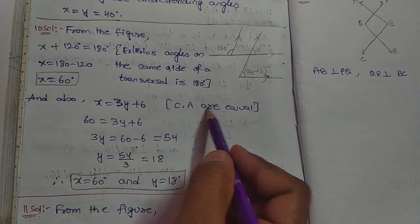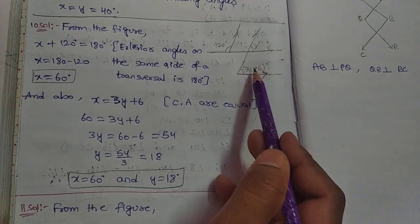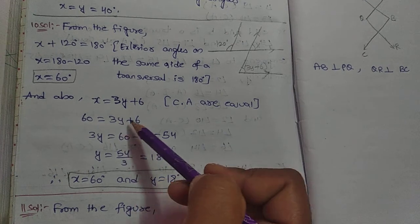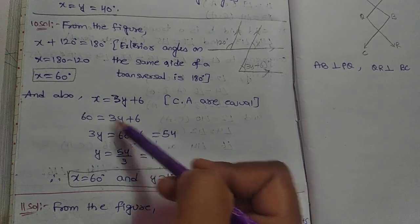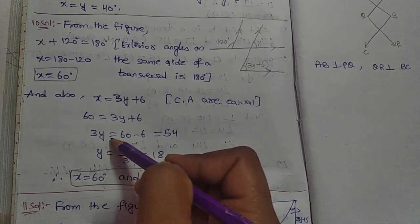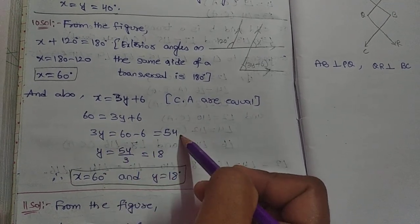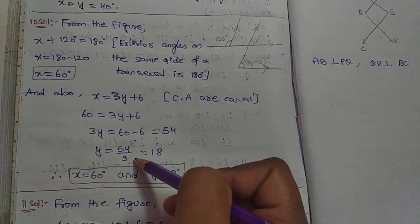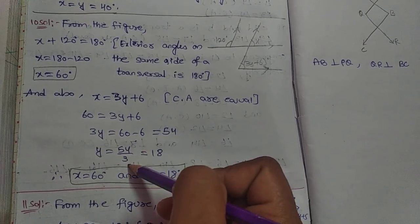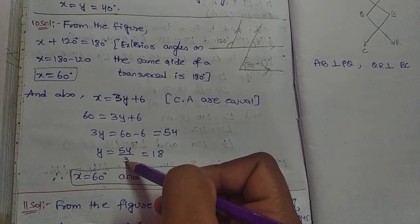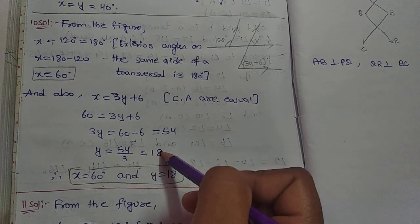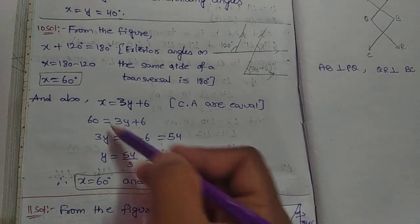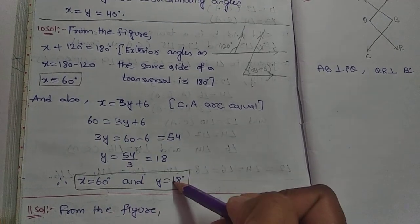Using corresponding angles being equal, the two angles are equal. Substituting x equals 60, we get 3y plus 6 equal to 60, so 3y is equal to 54. Transposing and dividing by 3, 54 divided by 3 equals 18 degrees. So x is equal to 60 degrees and y is equal to 18 degrees.